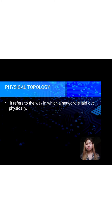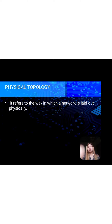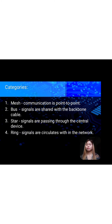We have physical topology — it refers to the way in which a network is laid out physically. There are categories of physical topology. Number one is mesh — communication is point-to-point. Number two is bus — signals are shared along the backbone cable. Number three is star — signals pass through the central device. And the last is ring — signals circulate within the network.